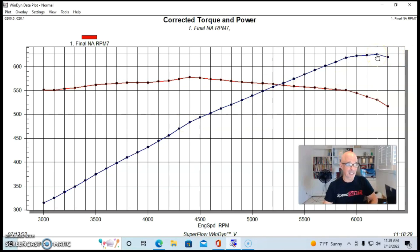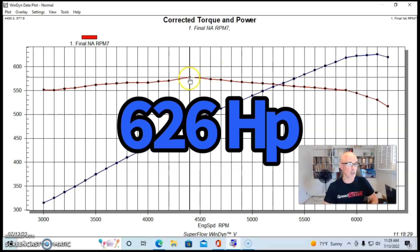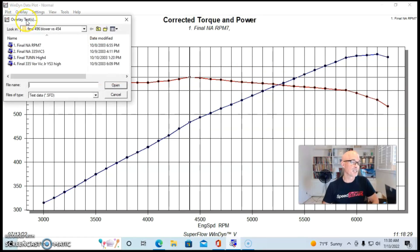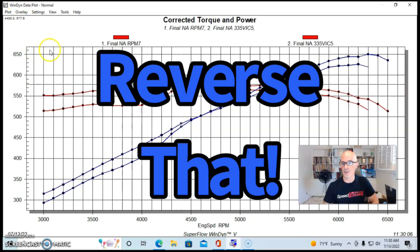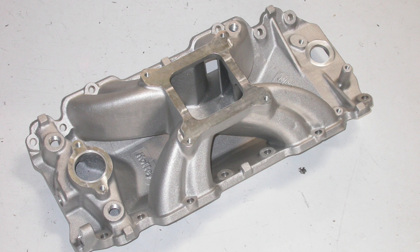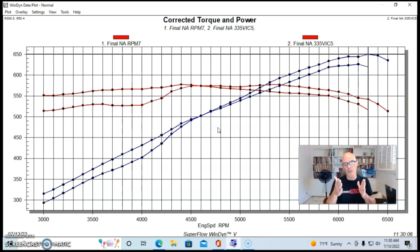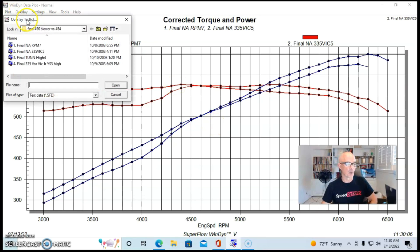We ran this first with a dual plane and it made 626 horsepower and 578 foot-pounds of torque. Here's what happened - we replaced the dual plane with a single plane Victor Jr and it produced 650 horsepower. You can see in kind of typical single plane dual plane fashion, the dual plane made more power up to 4500 and the single plane was much softer there and then the single plane added a little bit more power.